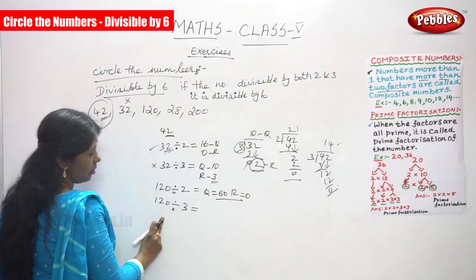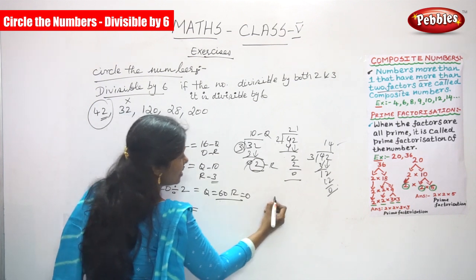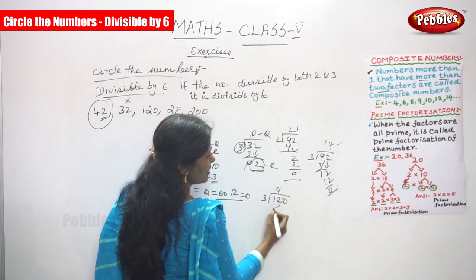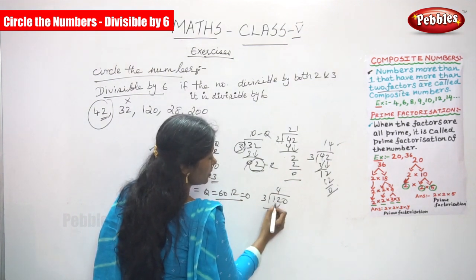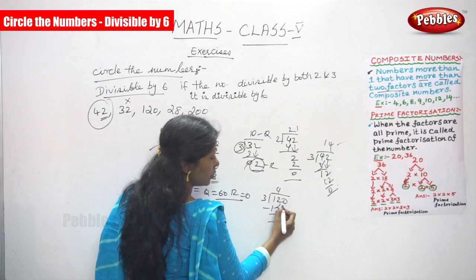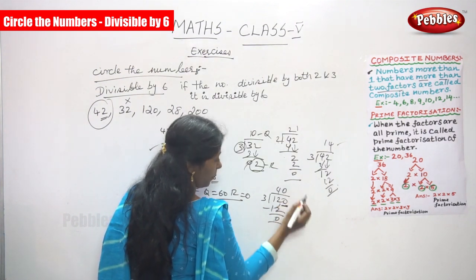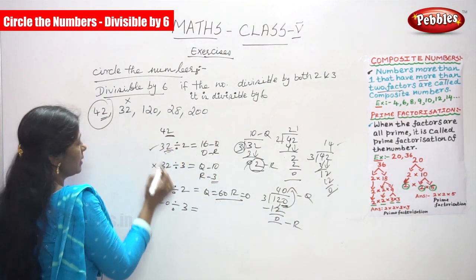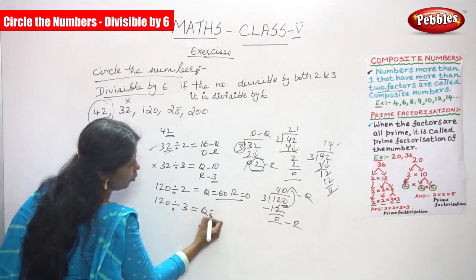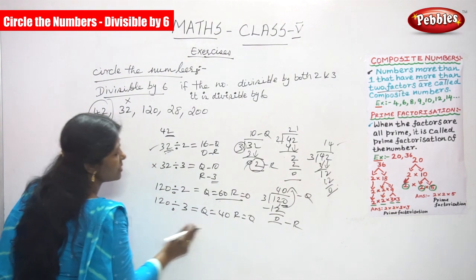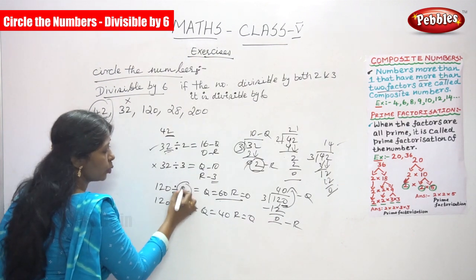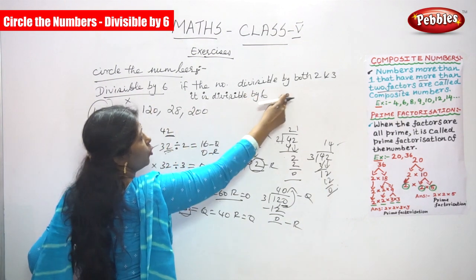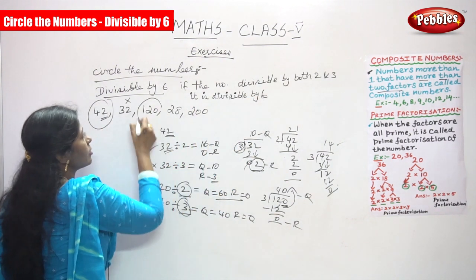Is 120 also divisible by 3? Yes. 3 × 4 = 12, bring down 0, remainder 0 — quotient is 40, remainder 0. So 120 is divisible by both 2 and 3, making the rule applicable. Circle this number.